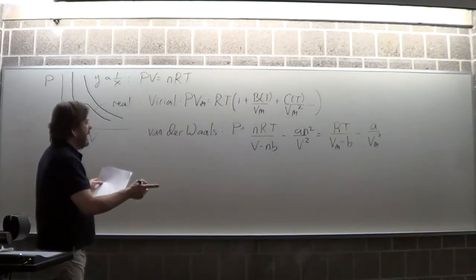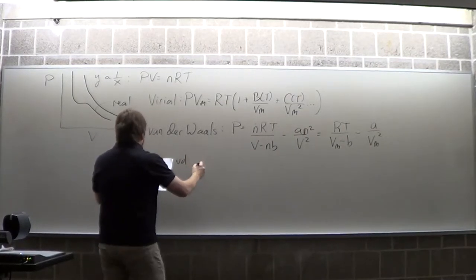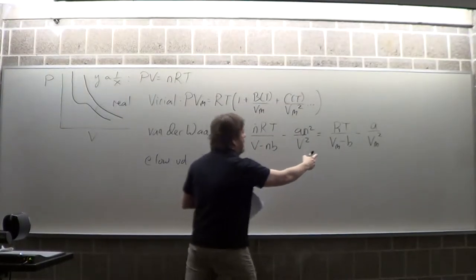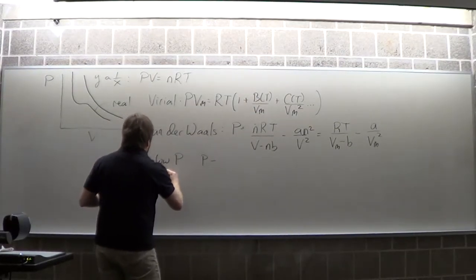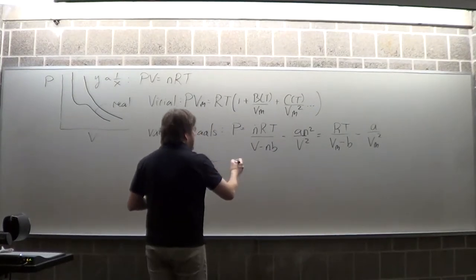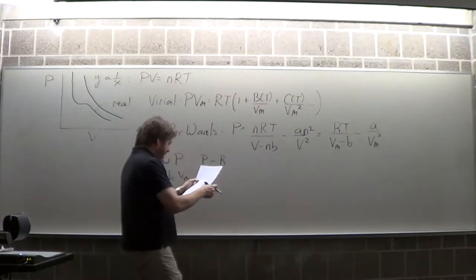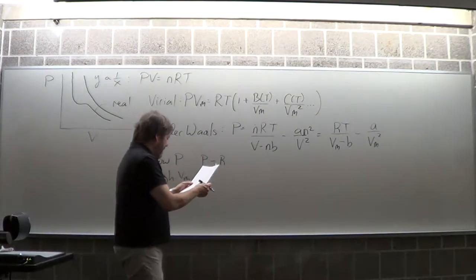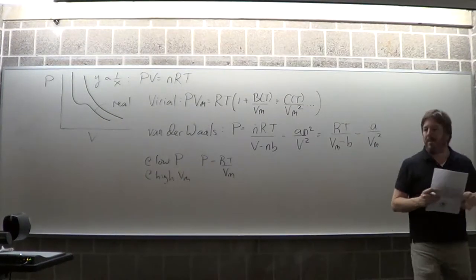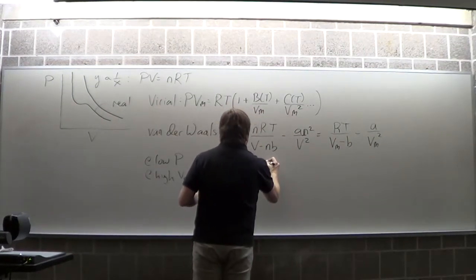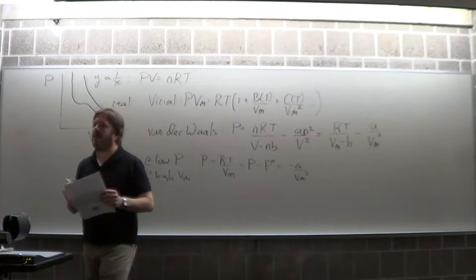At low pressure, high volume, we can manipulate the Van der Waals equation as follows. At very high volume, we can ignore B, and what we recognize is that P minus RT/V_M is the real gas pressure minus the perfect gas pressure, and we're left with A/V_M². These are the kinds of algebraic manipulations I definitely have on the test — take a real gas equation and manipulate it in two or three steps.